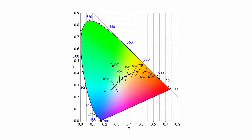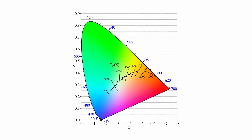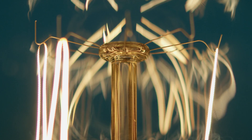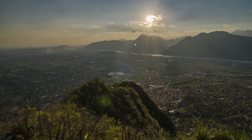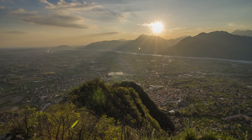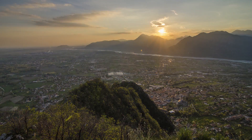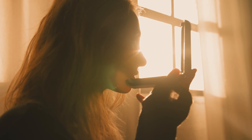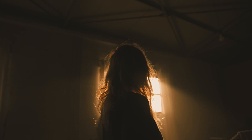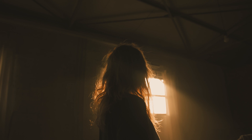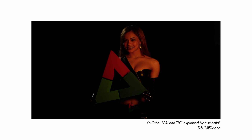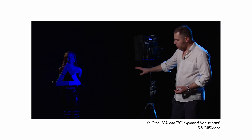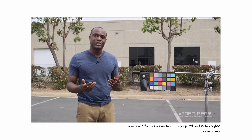In a previous video I went over blackbody radiators such as tungsten and the sun. These sources have very smooth and broad spectral curves which provide excellent color rendition. As filmmakers, there are thousands of different lights we can use to tell our story, but this means there are thousands of different variables that can affect our color.